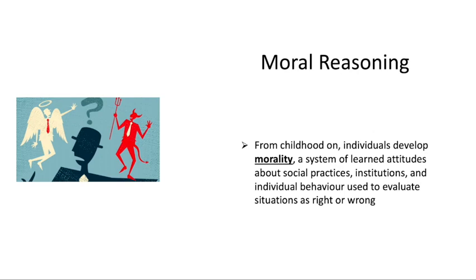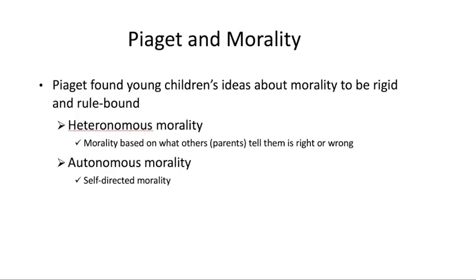We've talked about cognitive, motor, prenatal, and emotional development. Now we discuss moral reasoning and moral development. Moral development concerns how people develop a moral compass — a system of attitudes guiding what is right and what is wrong. This compass can be picked up from tradition, culture, institutions, parents, or peers. Piaget also had a theory of moral development. He said that children early on — especially in the pre-operational and concrete operational stages — show rigid, rule-bound morality almost always based on an external force.